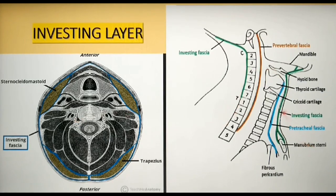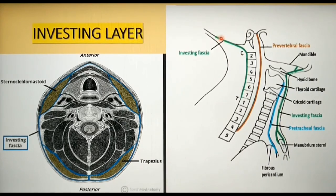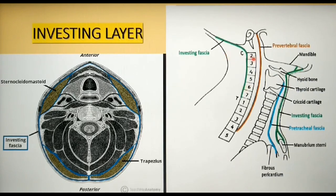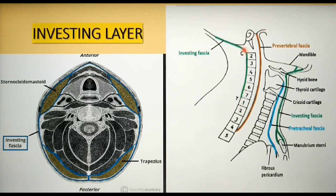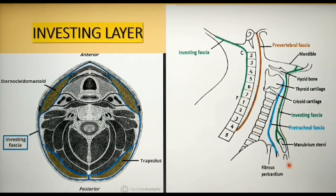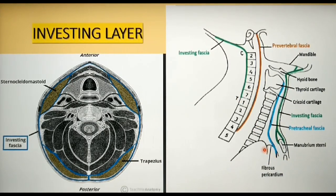Here is the sagittal view. The investing fascia in green is attached superiorly to the external occipital protuberance, the superior nuchal line of the skull, the mastoid process, and the base of the mandible. Anteriorly, the limit is the hyoid bone and the symphysis menti. Posteriorly, it is attached along the nuchal line and the spine of C7, attached to the ligamentum nuchae. Inferiorly, the limit is the manubrium sternum.